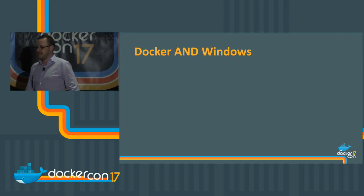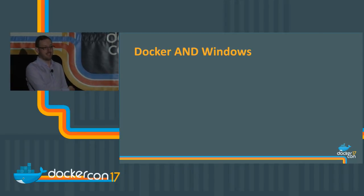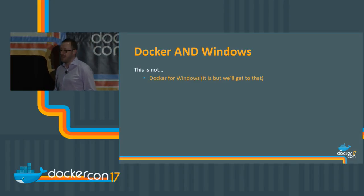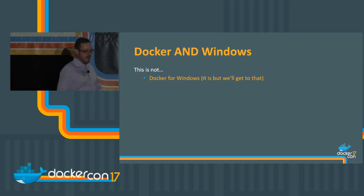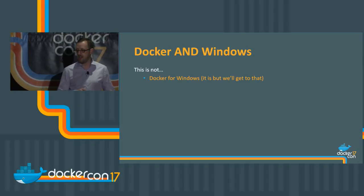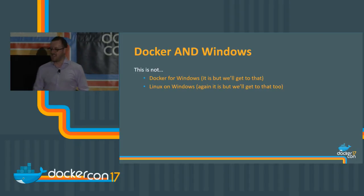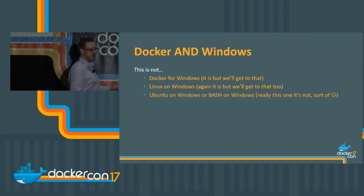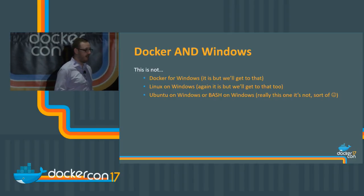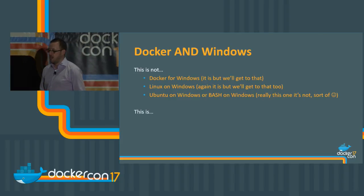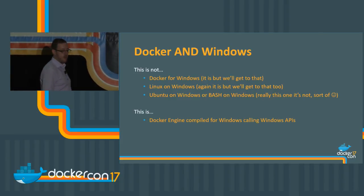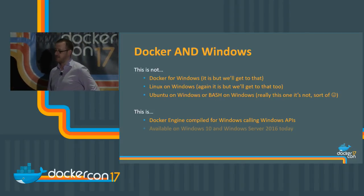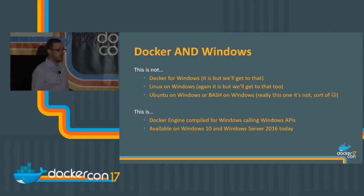As we think about Docker and Windows, when we titled this session we weren't sure we were going to do the Linux demo today. What we're really not talking about here is Docker for Windows. We're also not really talking about Linux on Windows, and we're not going to talk about Ubuntu on Windows, which is our Bash subsystem. What we really want to talk about is the Docker engine as compiled for Windows using Windows APIs — Windows containers, how Docker talks to Windows containers, and how Linux containers will come along. These are things available on Windows 10 and Server 2016 today.